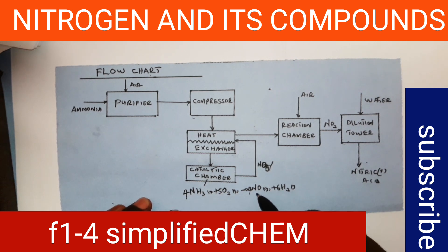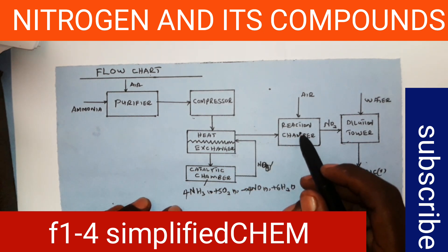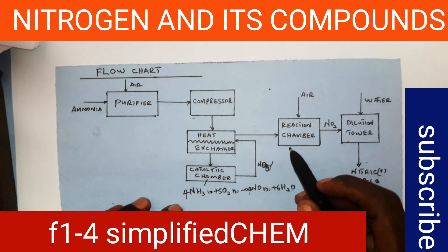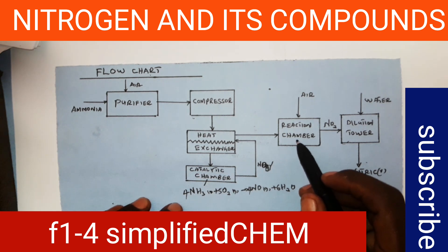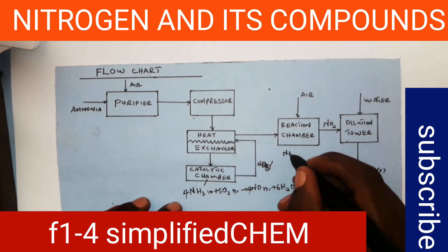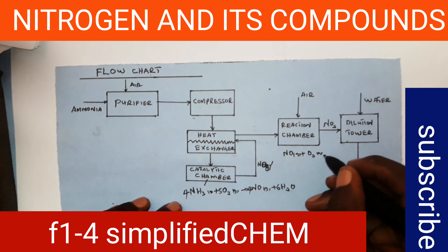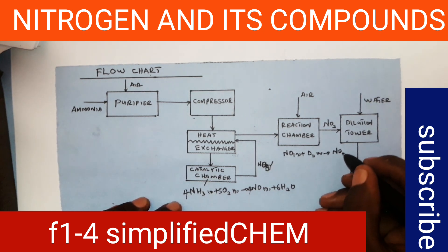After the formation of nitrogen monoxide, it is pumped back into the heat exchanger for cooling. After it has been cooled, it is pumped into the reaction chamber, whereby the temperature is lowered to about 45 degrees Celsius, so that it is easily oxidized to nitrogen dioxide (NO₂), as follows: nitrogen monoxide plus oxygen gives nitrogen dioxide.